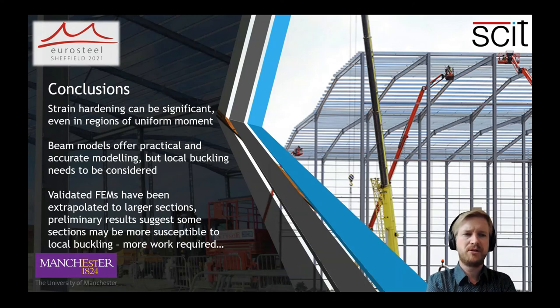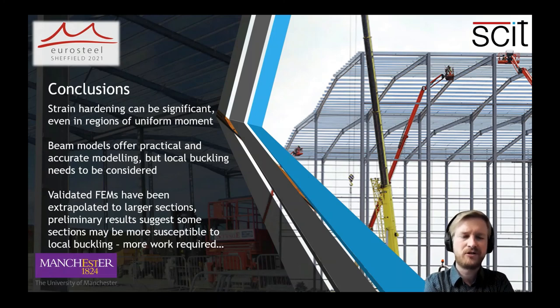So in conclusion, beam models are usually used for plastic design. However, currently the second order effects are not included analytically. Code methods or approximate methods such as alpha crit are used. Similarly, strain hardening isn't included, but this is seen as an additional reserve of safety.